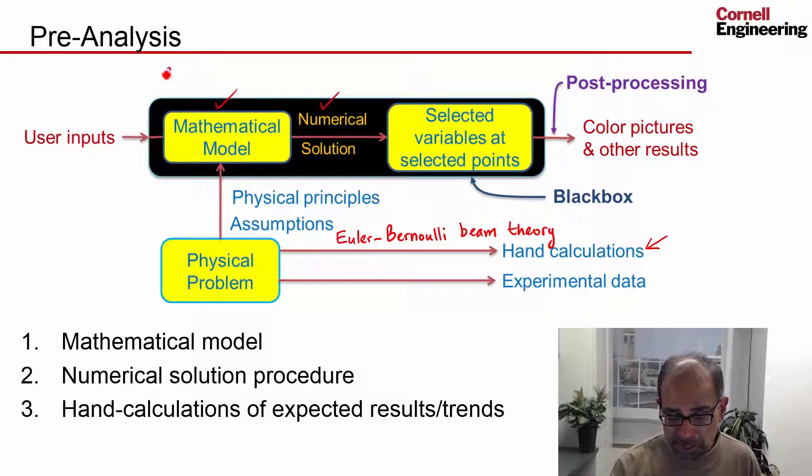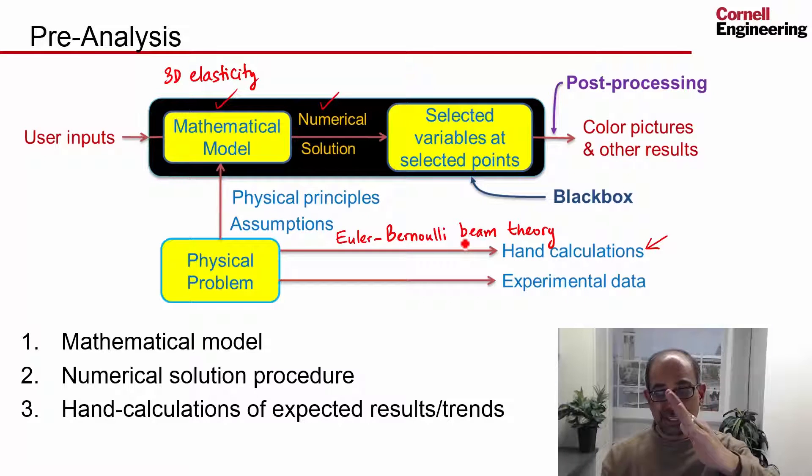And our ANSYS model is based on 3D elasticity. So the hand calculations are using a different mathematical model. And beam theory, the Euler-Bernoulli beam theory has additional assumptions. It assumes that plane sections remain plane and they just rotate. I'll get to that. But the important takeaway is that the hand calculations are based on a different mathematical model than the ANSYS results.